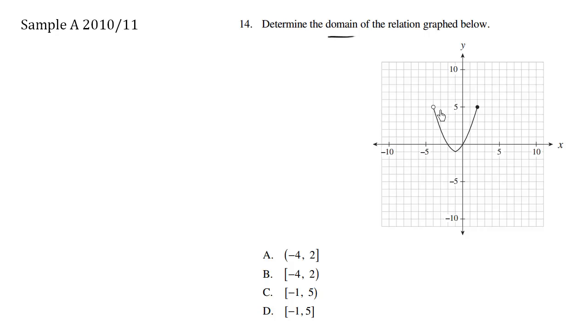From where to where, the x values. And we see here that we're starting around here, which is negative 4, all the way to 2.